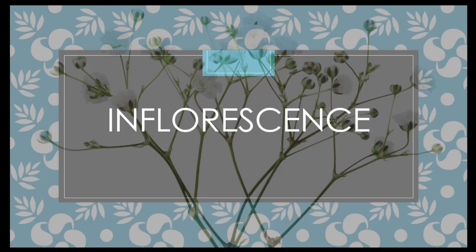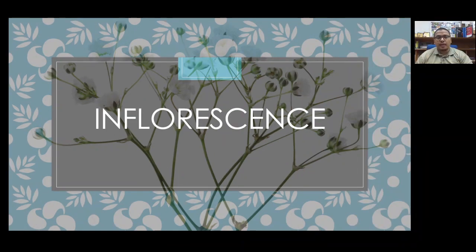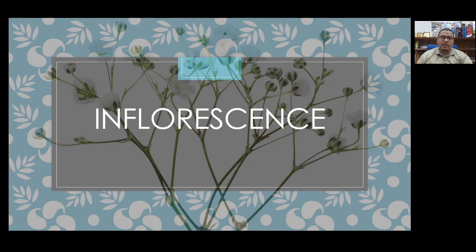Let's talk about inflorescence. Inflorescence is a modified shoot system that bears flowers or modified shoots. The term inflorescence refers to the arrangement of flowers on a plant. In many plants, flowers are arranged into clusters, and that flower cluster is called an inflorescence.